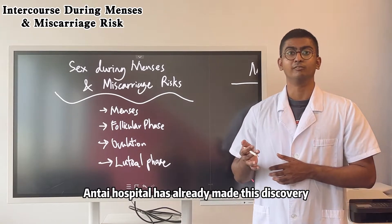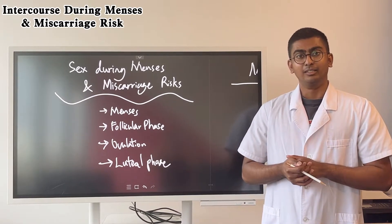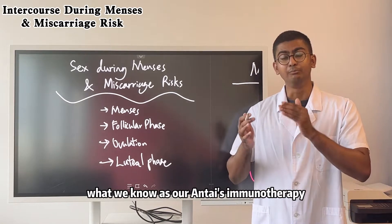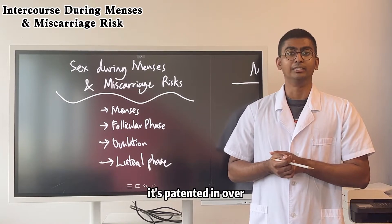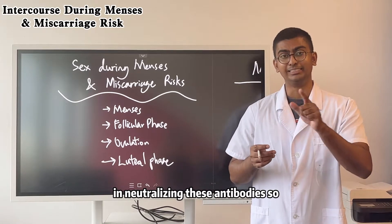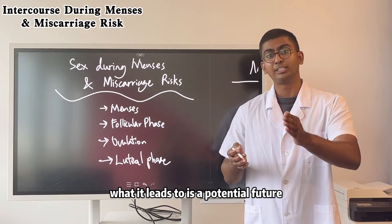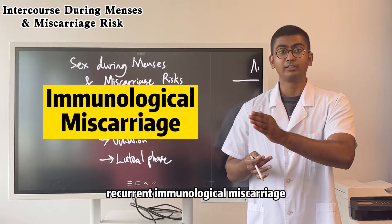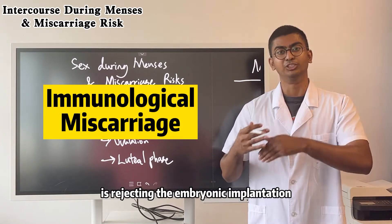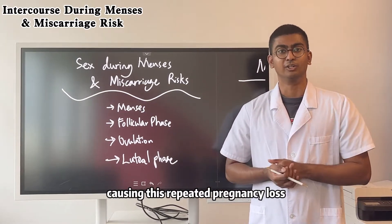Anti-Hospital has already made this discovery, and through this discovery, we've also invented a treatment method known as our anti-immunotherapy. It's patented in over 30 countries and is highly effective in neutralising these antibodies. What it leads to otherwise is a potential future recurrent immunological miscarriage, where the mother's immune system is rejecting the embryonic implantation, causing this repeated pregnancy loss.